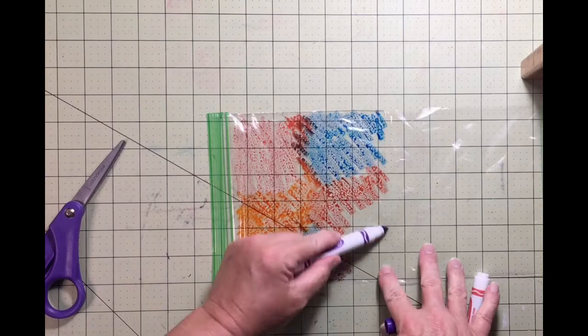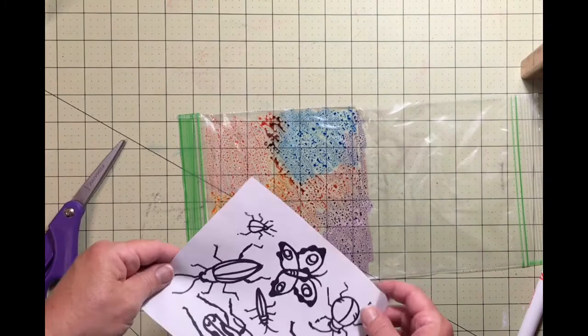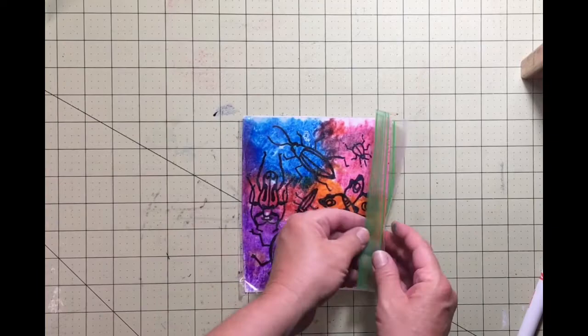So another great project using this technique would be to make a butterfly. You could cut out the shape of it, hang it in a window so that the sunlight would glow through, give you a very nice effect, almost like stained glass.